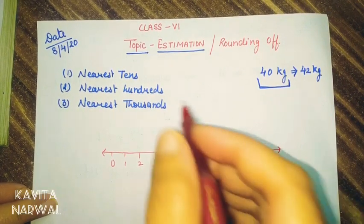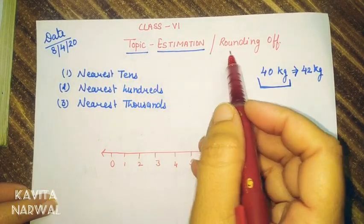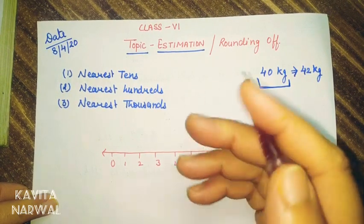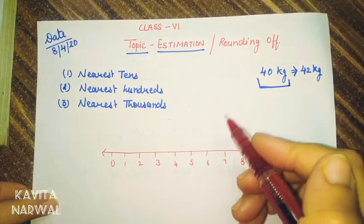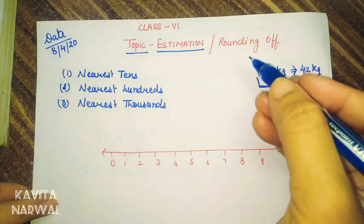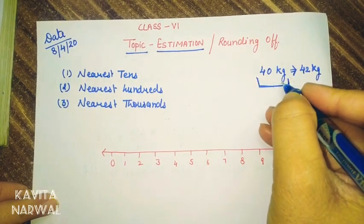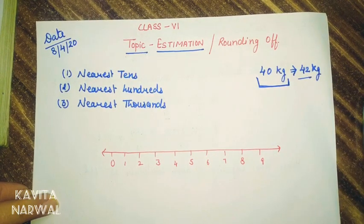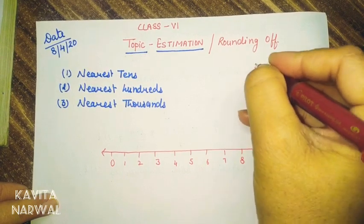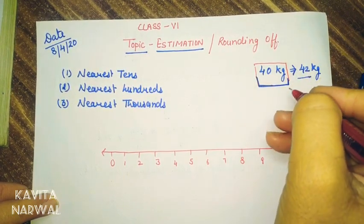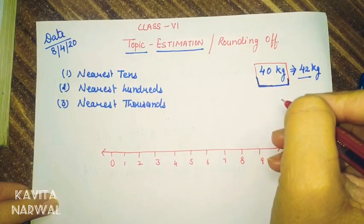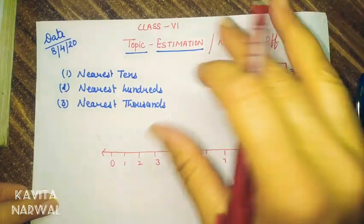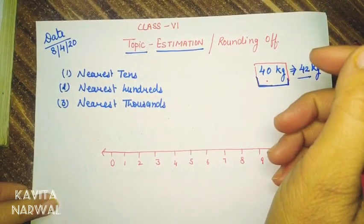Good morning. Today we are going to discuss about estimation or round off. Estimation means if we don't know the exact thing and we are giving any approximate idea, that is called round off. For example, if somebody asks about your weight, you might say it's approximately 40 kg. But your real weight is 42 kg. So that is called estimation — when we don't know the real number and we are giving an idea near about it.